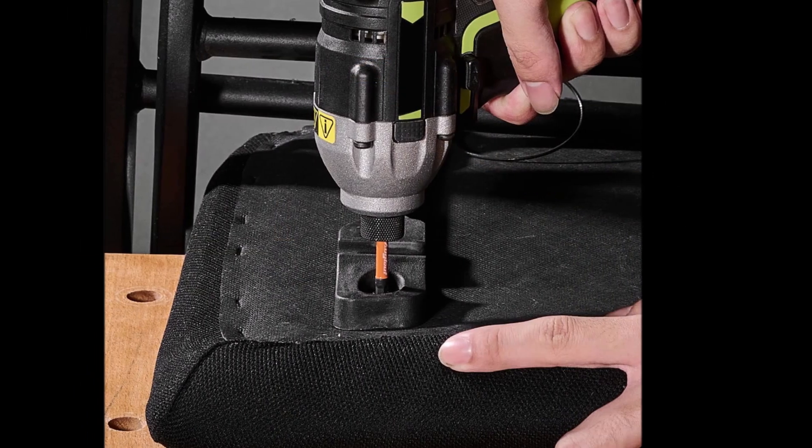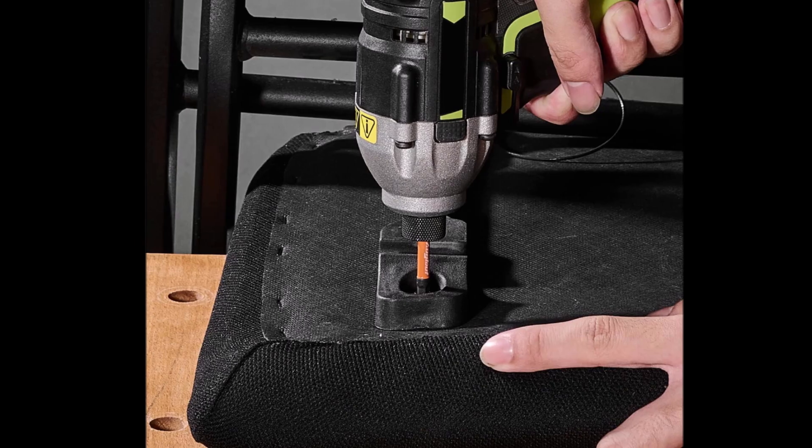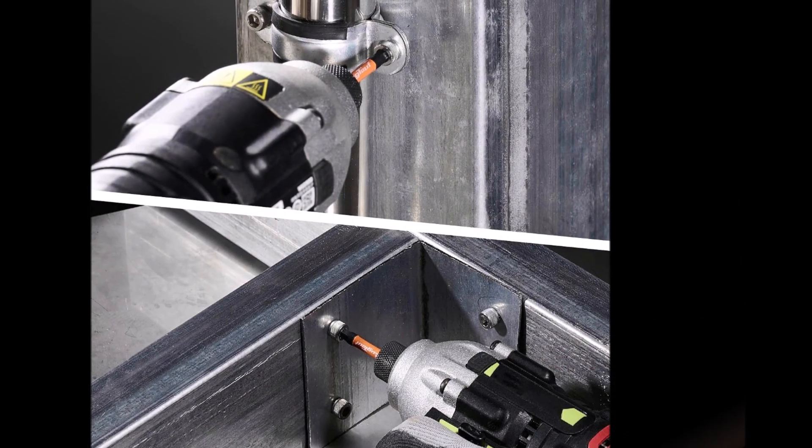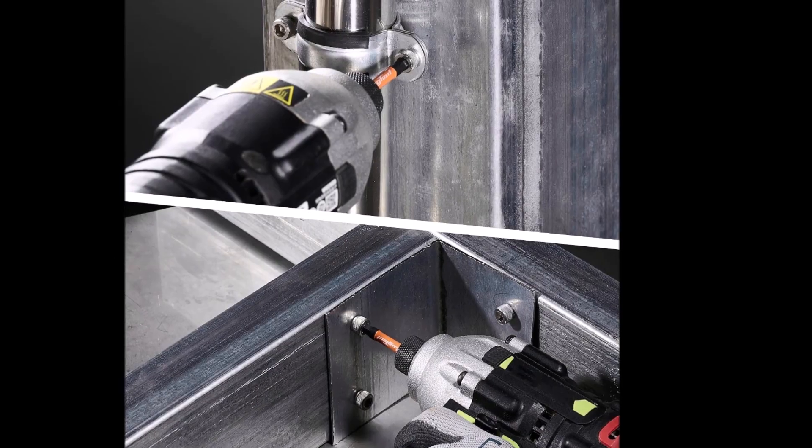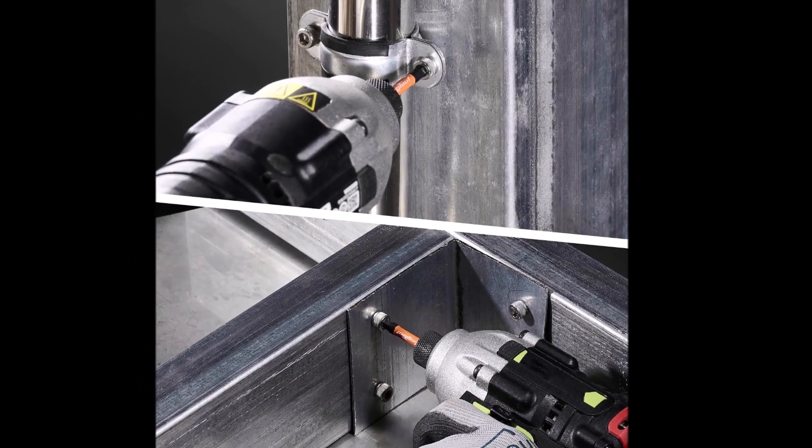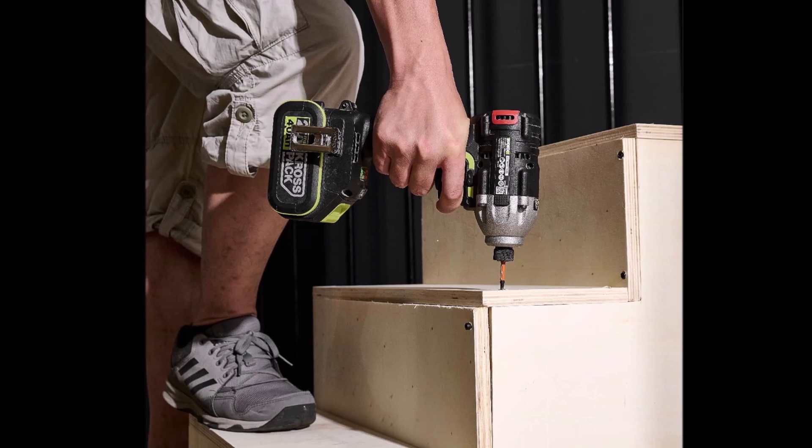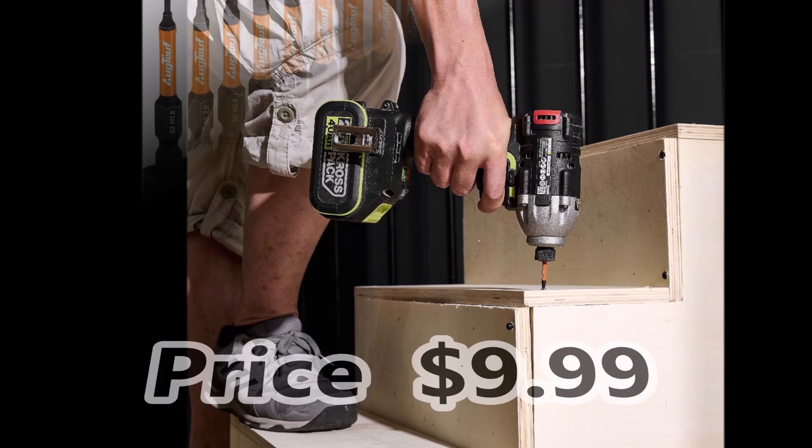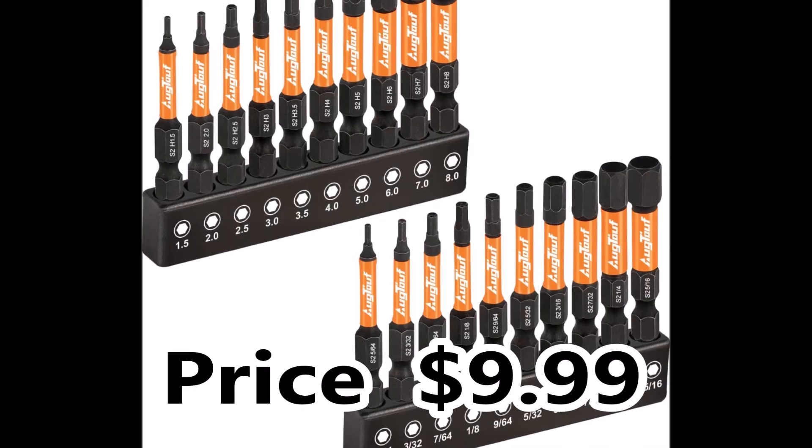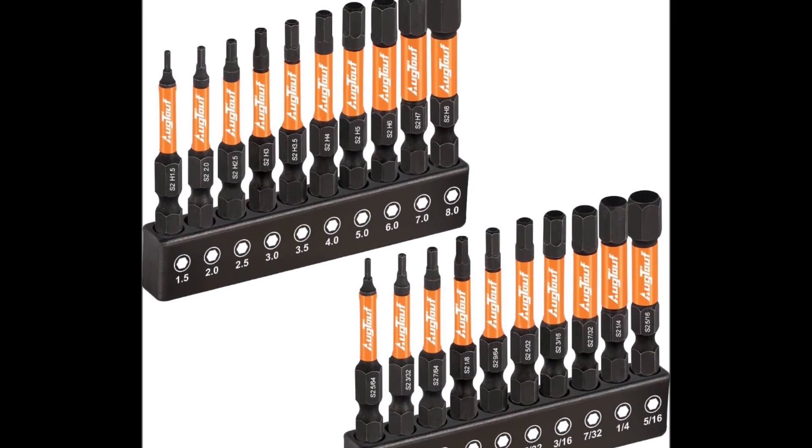The quarter-inch quick-release hex shank makes swapping bits fast and smooth, and the 2-inch length offers better reach in tight spaces. The magnetic tips are strong and reliable, holding screws securely without losing grip over time. Packed in a compact storage box, this set is a practical choice for professionals and DIY users who need consistent performance.